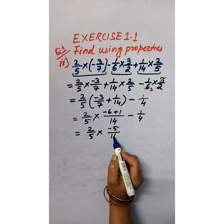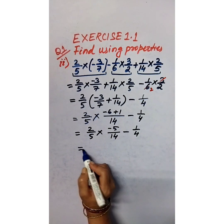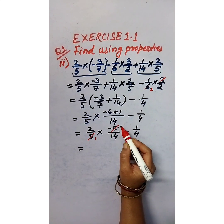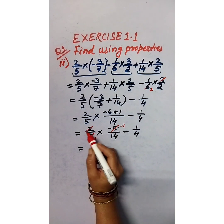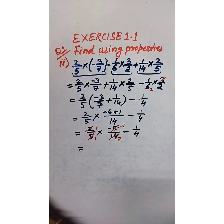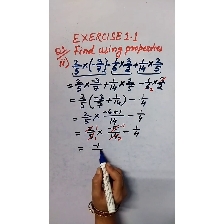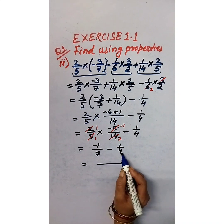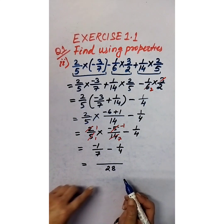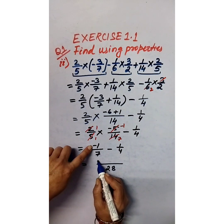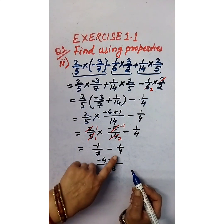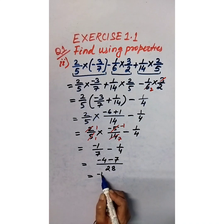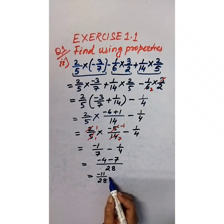That equals 2/5 into negative 5/14, minus 1/4. Reducing 5 and 5 gives negative 1; 2 ones are 2, 7 twos are 14, so we get negative 1/7. Now we have negative 1/7 minus 1/4. The LCM of 7 and 4 is 28. So 4 times negative 1 is negative 4, and 7 times negative 1 is negative 7, giving negative 4 minus 7 equals negative 11 over 28.